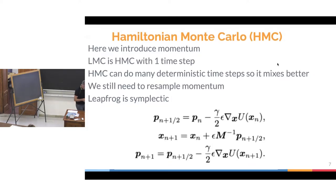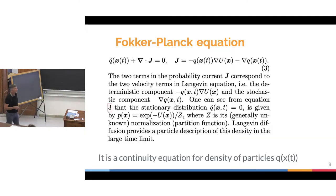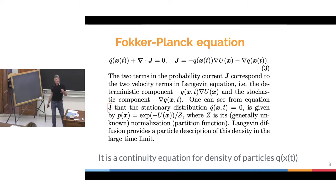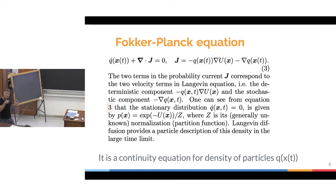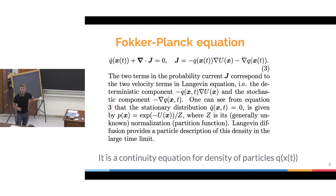Now let's look at the Fokker-Planck equation. The Fokker-Planck equation describes how a density distribution evolves under an external potential — it's really a density description of the Langevin equation. The Langevin equation follows individual particles; the Fokker-Planck equation describes the density itself. It's a continuity equation: the change in density equals the divergence of the flux, where the current density q times the gradient of the target density minus the gradient of the current density gives the flux.